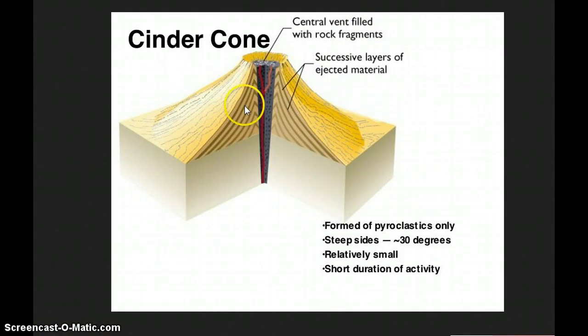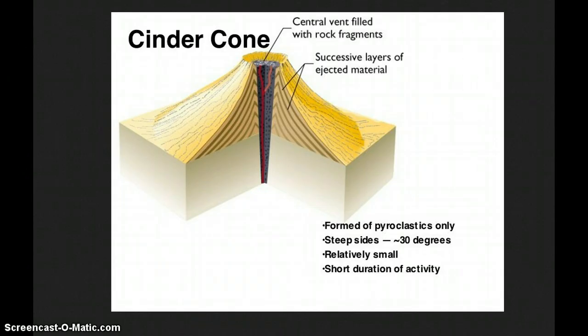You have a cinder cone volcano. You notice here, the cinders just pop out and they land real close to the center part, the central vent here, and just builds up layers upon layers. They have steep sides, but it's relatively small. And they're not reactive very long. It's rich in gas. There's lots of gas in there. That's the power, the force that shoots all these little cinders out is the gas that gets trapped in the lava.